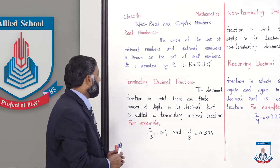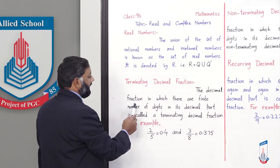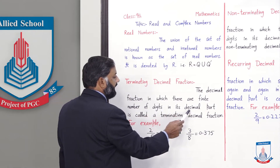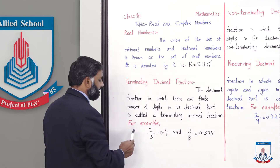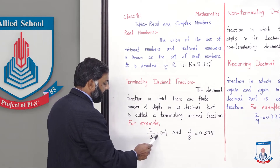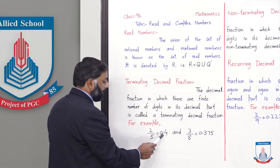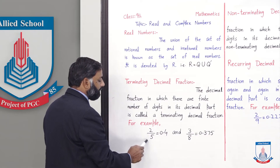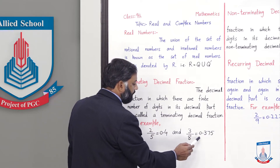Terminating decimal fraction کی definition: the decimal fraction in which there are finite number of digits in its decimal part is called a terminating decimal fraction. For example, 2/5 = 0.4 — decimal part میں صرف ایک digit ہے، جو کہ finite ہے، اس لیے یہ terminating decimal fraction ہے۔